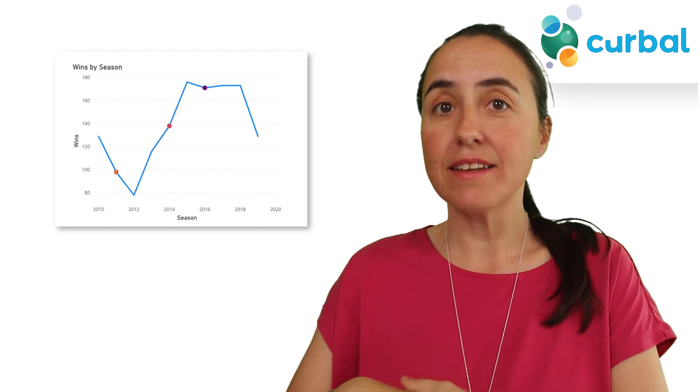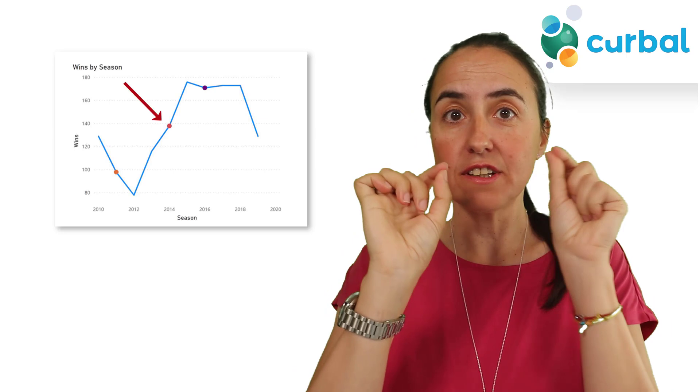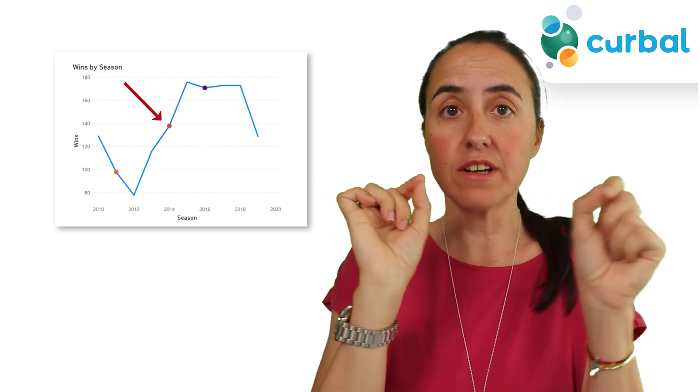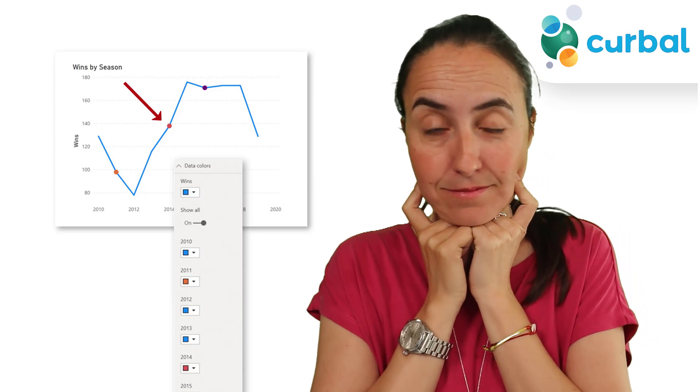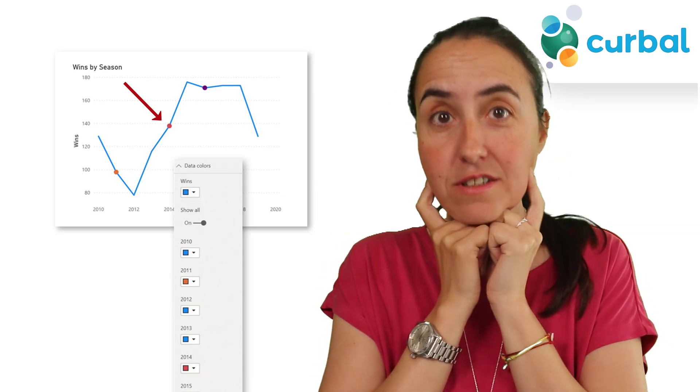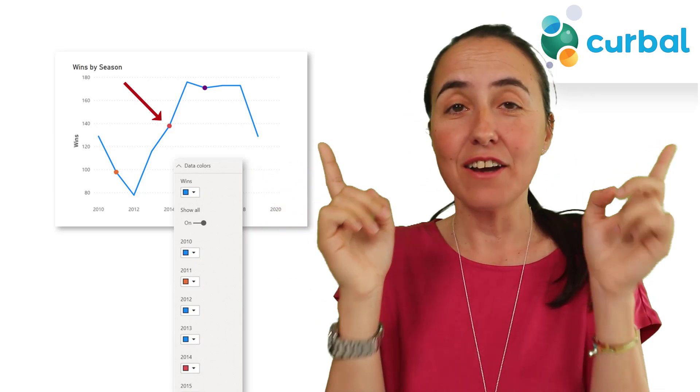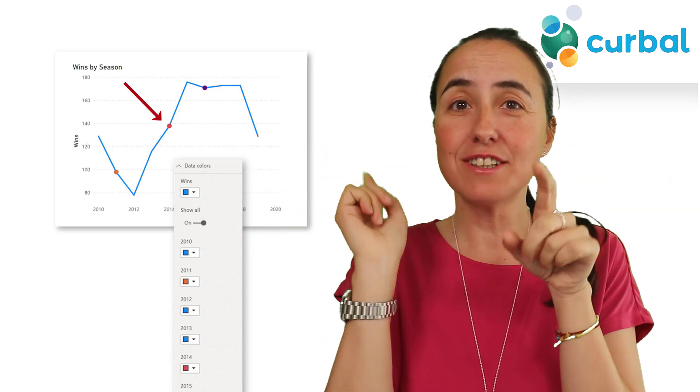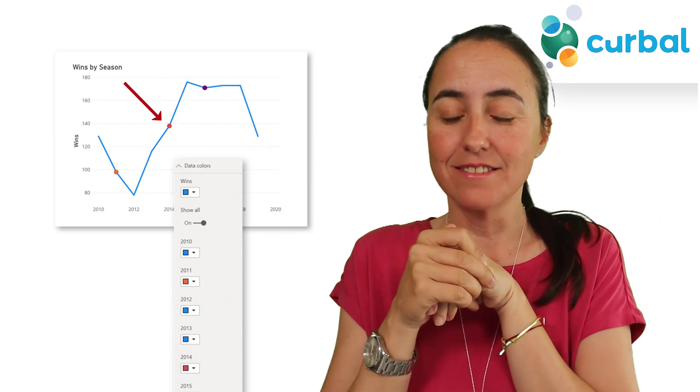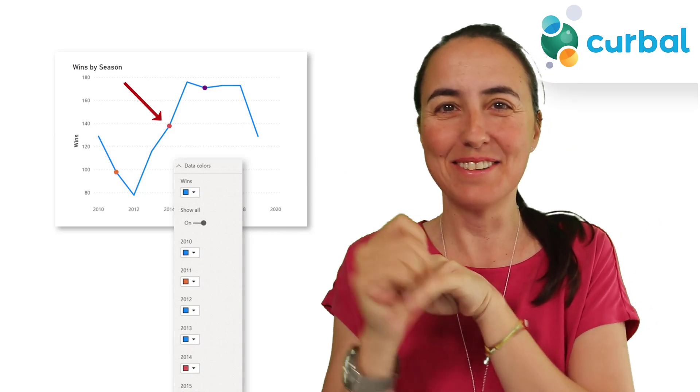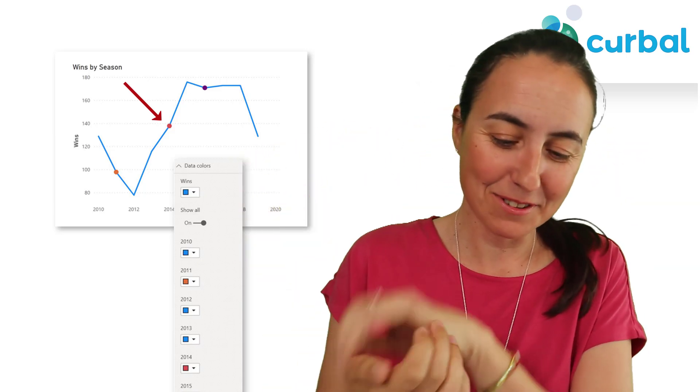Now let's move to the line chart updates. The dots that you can put on the line chart - you can now change the color manually. That needs to be conditional formatting using DAX for sure. And I don't want to change the color of the dots, I want to change the color of the line. That would make me happy. But you can change the dots manually, that's what you have for today.